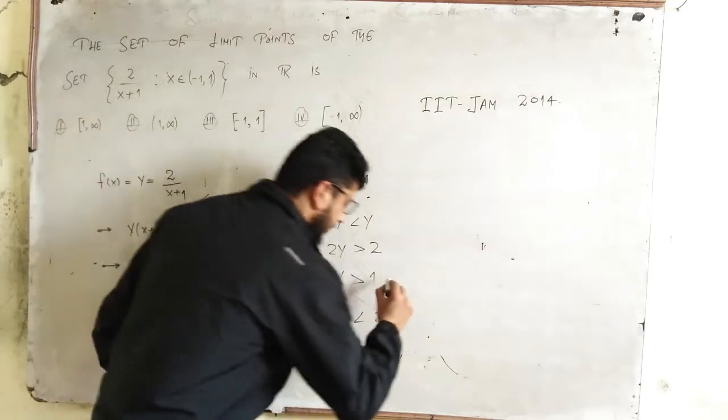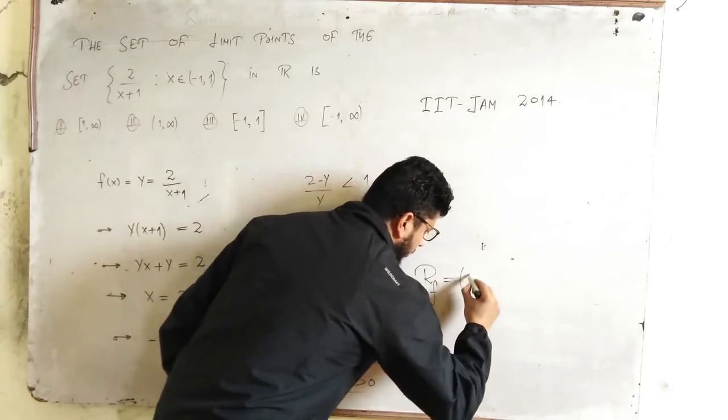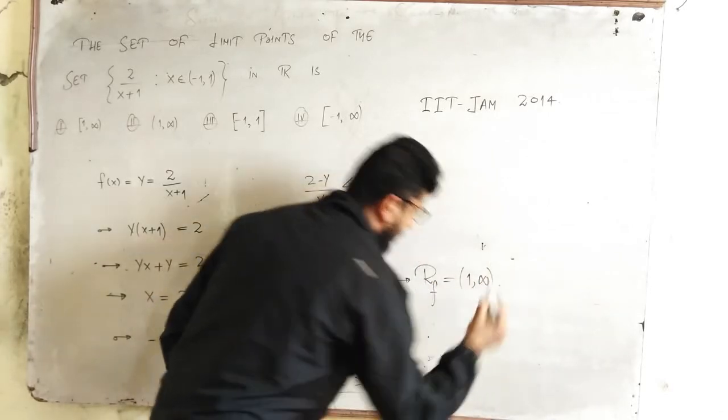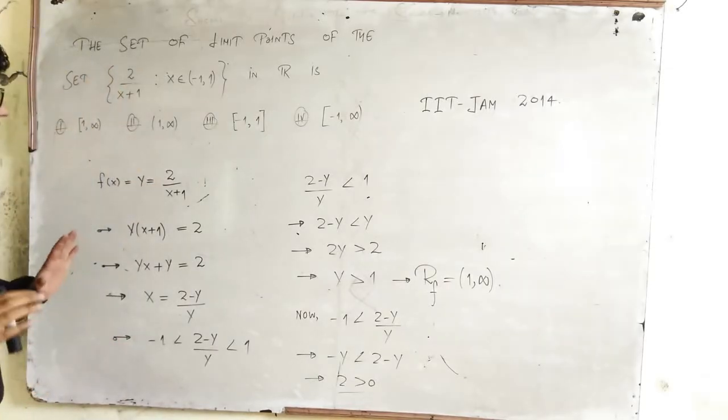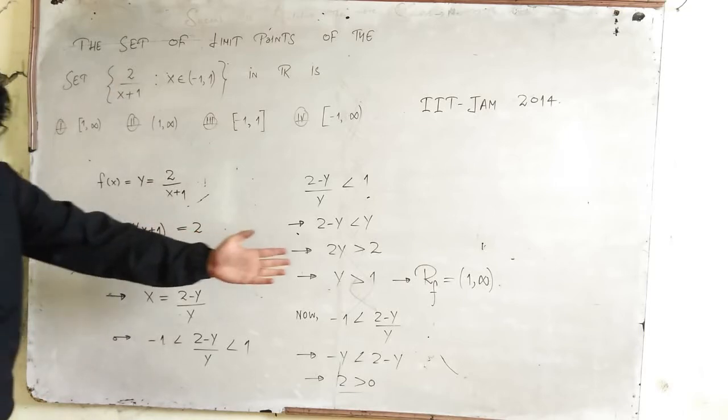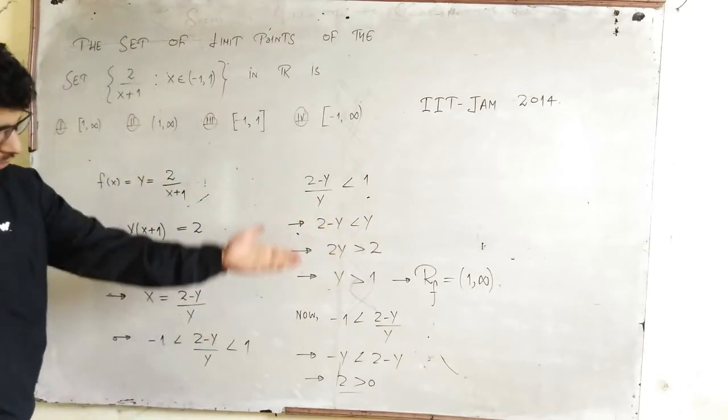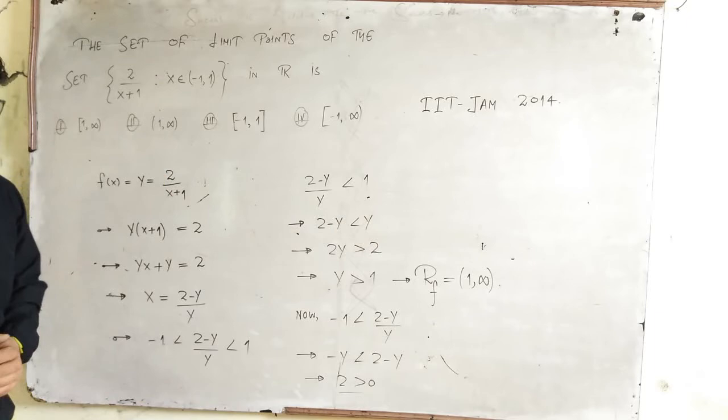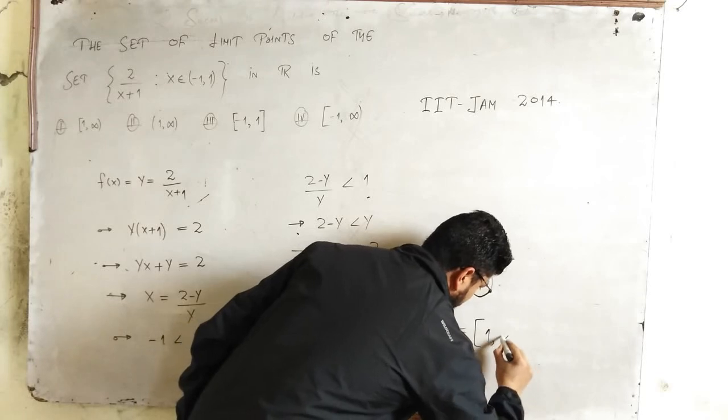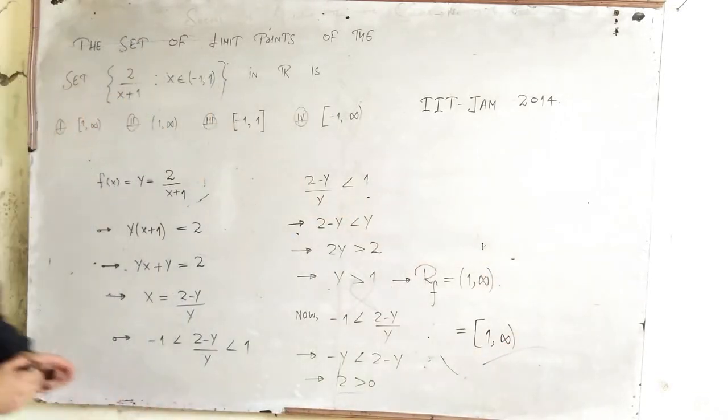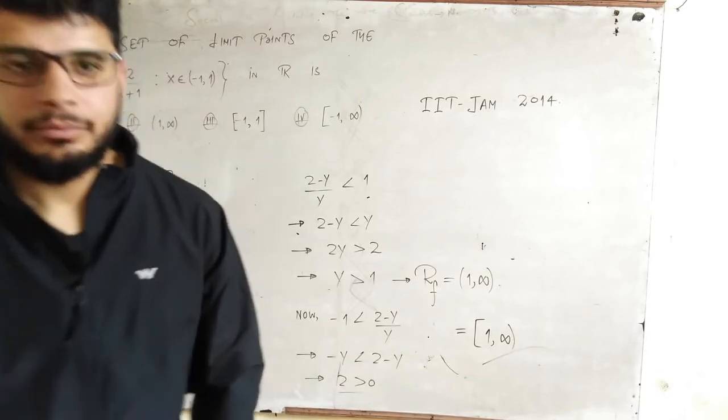But y > 1 implies the range of our function is open interval (1,∞). This is the range. Now it's easy that the set of limit points of this will be closed interval [1,∞). So by that, option number first is correct. Thank you.